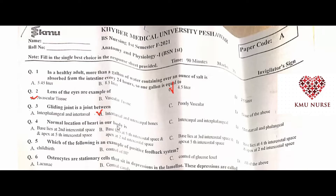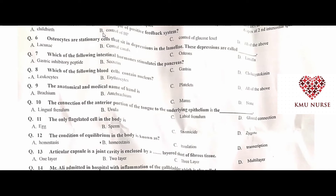The normal location of the heart in the body: the base lies at the fifth intercostal space and the apex at the second intercostal space — B is the correct answer. An example of a positive feedback system is childbirth — B is the correct option.